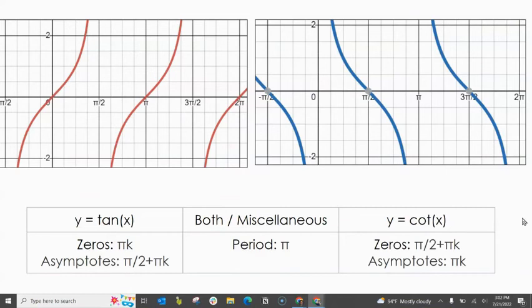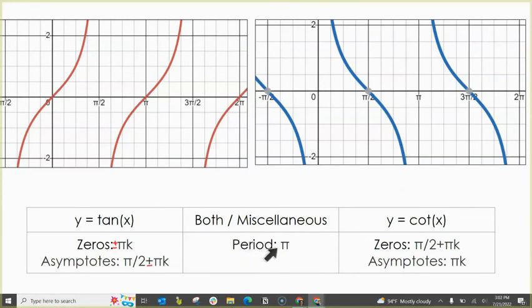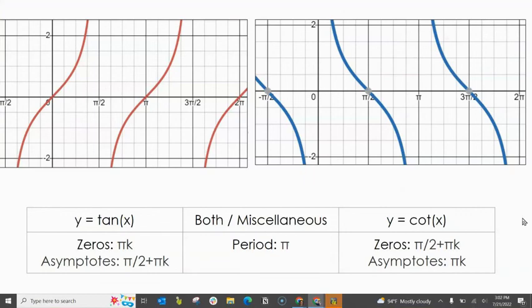The last slide summarizes everything. Here's the basic difference between tangent and cotangent. Tangent is on the left. Our zeros are at πk units, and our asymptotes are at π over 2 plus πk units. Period for both is π, which is important to remember because that's different than sine and cosine. Cotangent is in blue. What was an asymptote for tangent is a zero for cotangent. What was a zero for tangent is an asymptote for cotangent. That's how you graph tangent and cotangent.